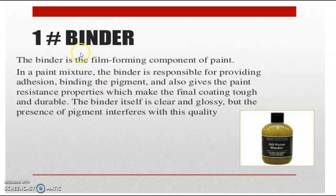We will discuss the binders. The binder is a film-forming component of a paint. In a paint mixture, the binder is responsible for binding the pigment and gives the paint resistance properties, which make the final coating tough and durable. Binders bind the paint on the substrate. They should be clear and glossy; if colored or any impurities are present, it imparts color and diminishes the activities of the pigment. Hence we use binders as clear and glossy. The presence of pigment interferes with this quality.